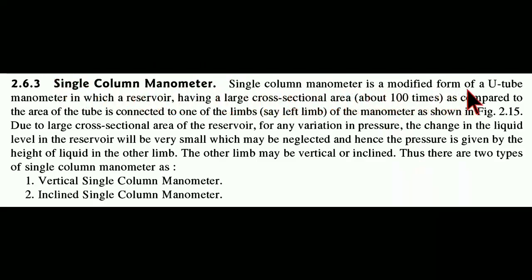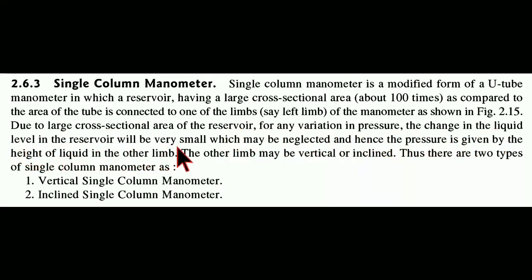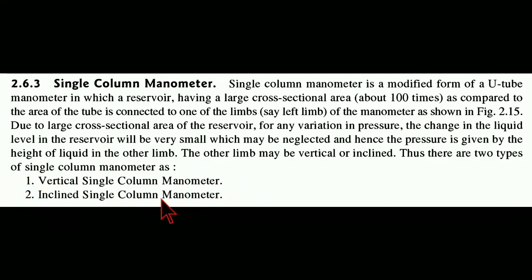A single column manometer is a modified form of a U-tube manometer in which a reservoir having a large cross-sectional area — about 100 times the area of the tube — is connected to one of the limbs, say the left limb, as shown in figure 2.15. Due to the large cross-sectional area of the reservoir, for any variation in pressure, the change in liquid level in the reservoir will be very small and may be neglected. Hence the pressure is given by the height of liquid in the other limb, which may be vertical or inclined. Thus there are two types: the vertical single column manometer and the inclined single column manometer.